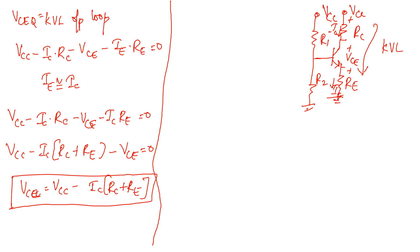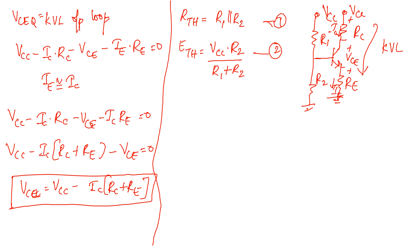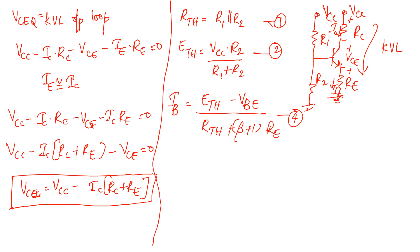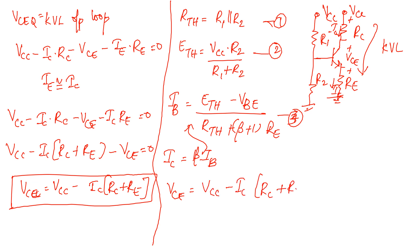To summarize the exact analysis: Equation 1 — RTH equals R1 parallel to R2. Equation 2 — ETH equals VCC into R2 divided by (R1 + R2). Equation 3 — IB equals (ETH minus VBE) divided by [RTH plus (beta + 1) into RE]. Equation 4 — IC equals beta into IB. Equation 5 — VCE equals VCC minus IC into (RC + RE). These are the five equations for exact analysis.